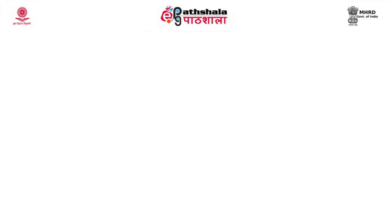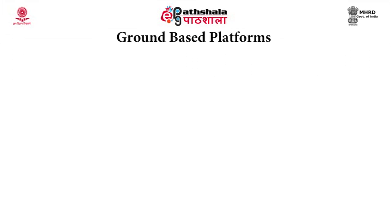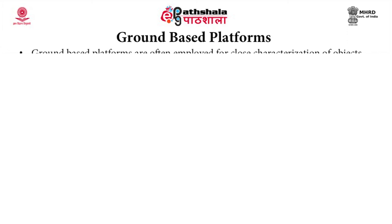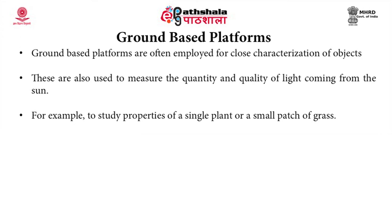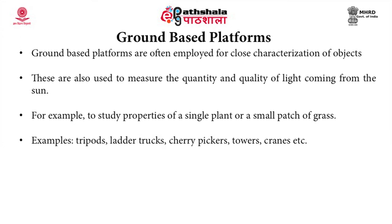Ground-based platforms are often employed for close characterization of objects and are used to measure the quantity and quality of light coming from the sun — for example, to study properties of a single plant or a small patch of grass. Examples of ground-based platforms include tripods, ladder trucks, cherry pickers, carts, cranes, etc.